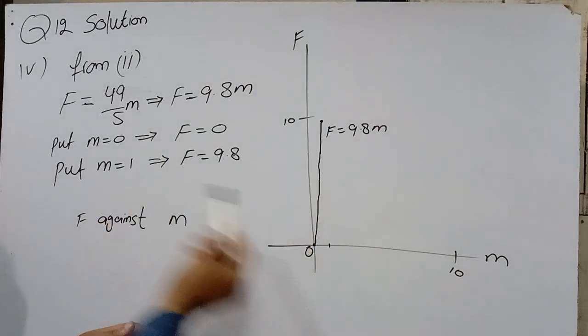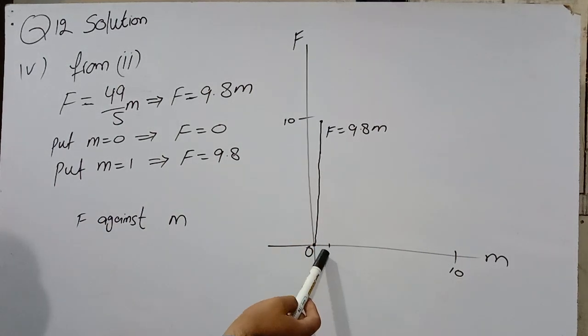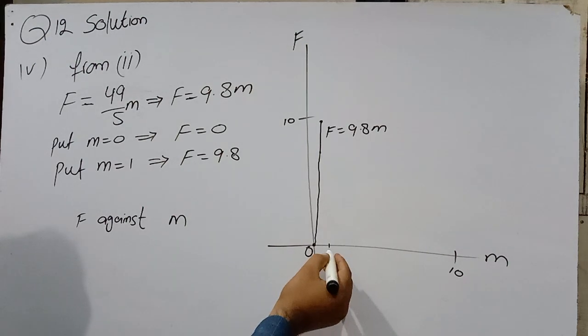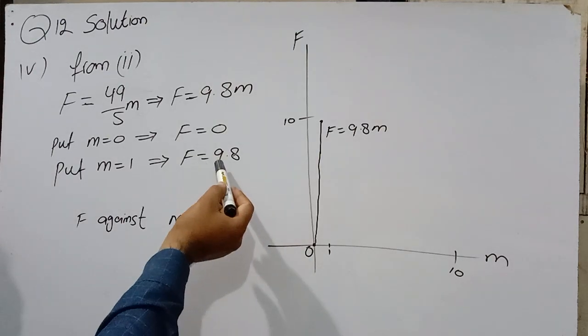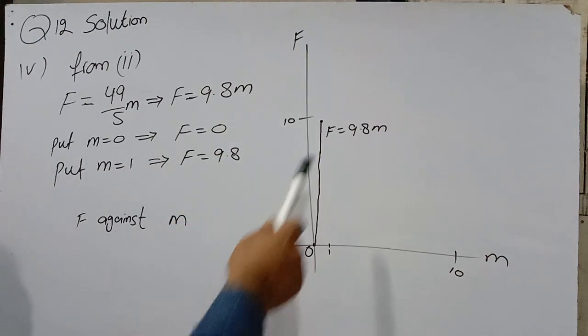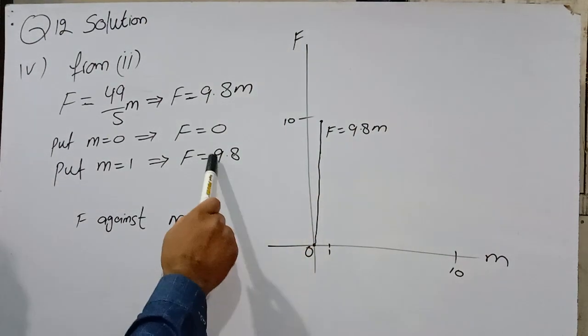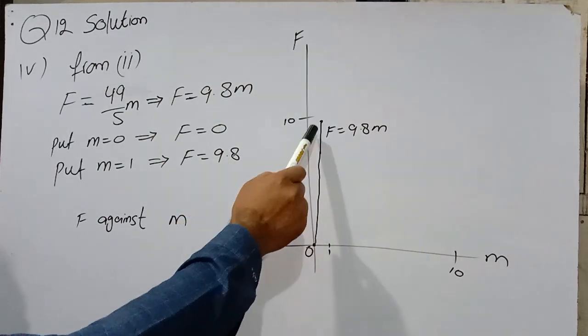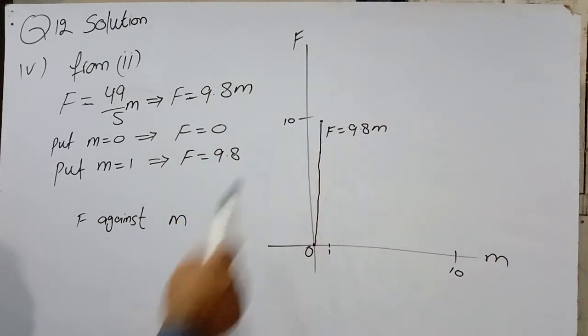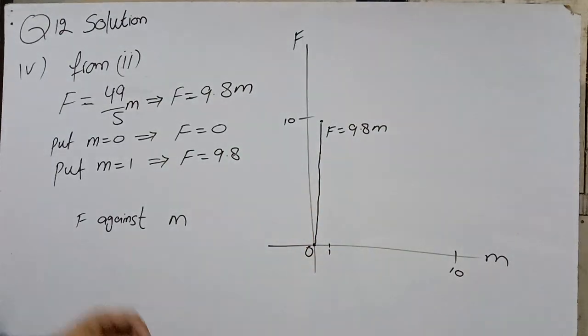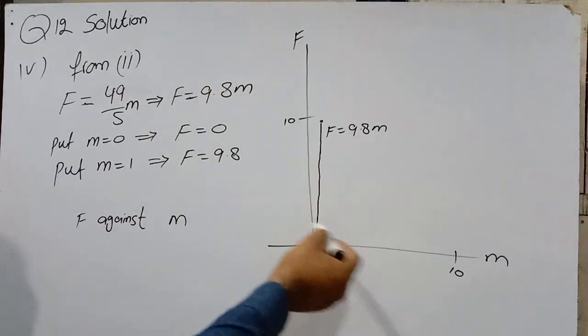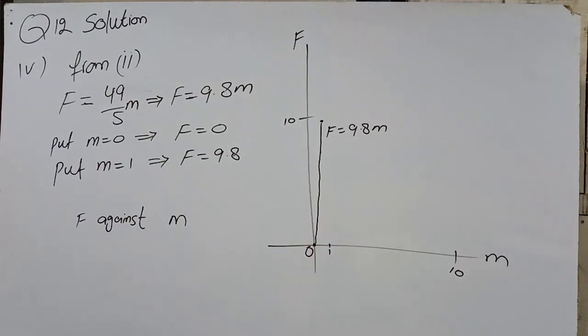If M = 1, take equal interval. This is 1. If M = 1, then F = 9.8. This is 9.8, 2 points less than 10. This line is F = 9.8M. This is F against M. Question number 12 complete.